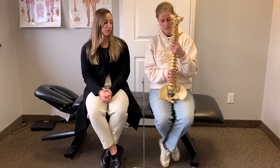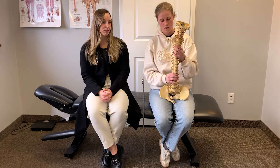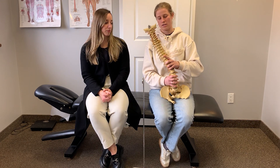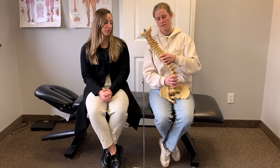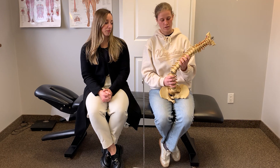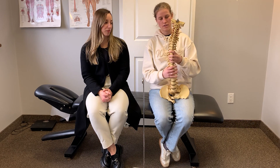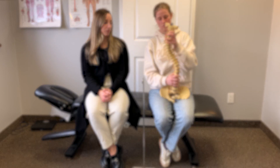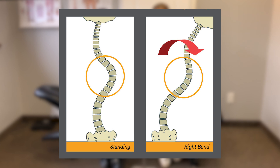The other test that can be done is called the lateral bend test. Usually when you bend side to side your spine moves like this, but with scoliosis the spine might not correct itself, so it will look a little different — that indicates a structural scoliosis.